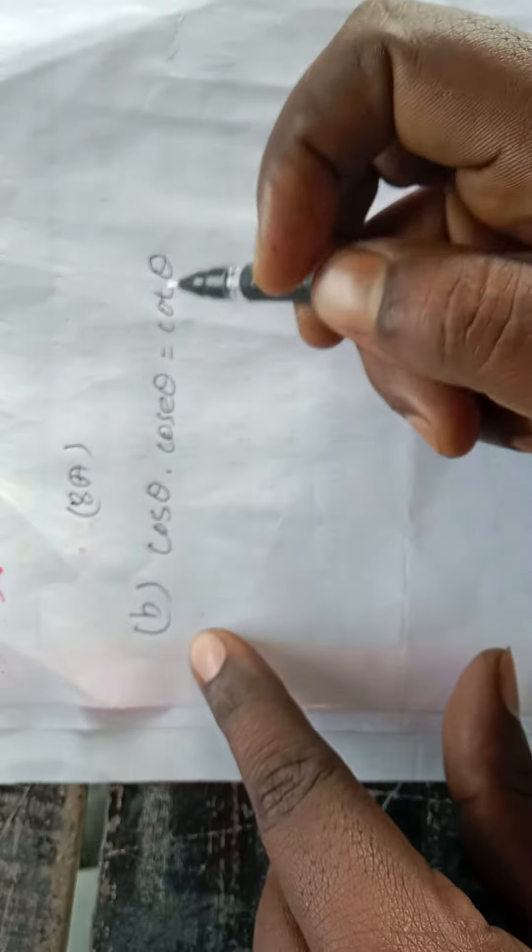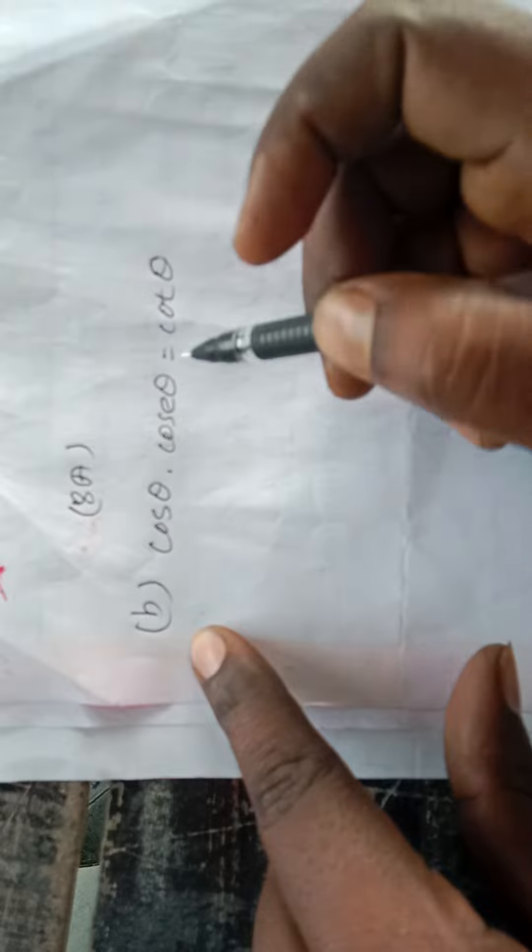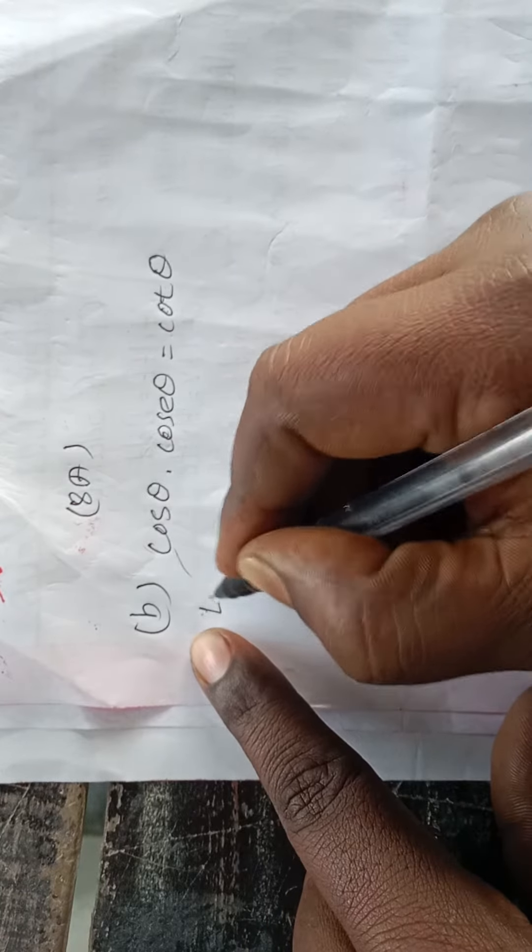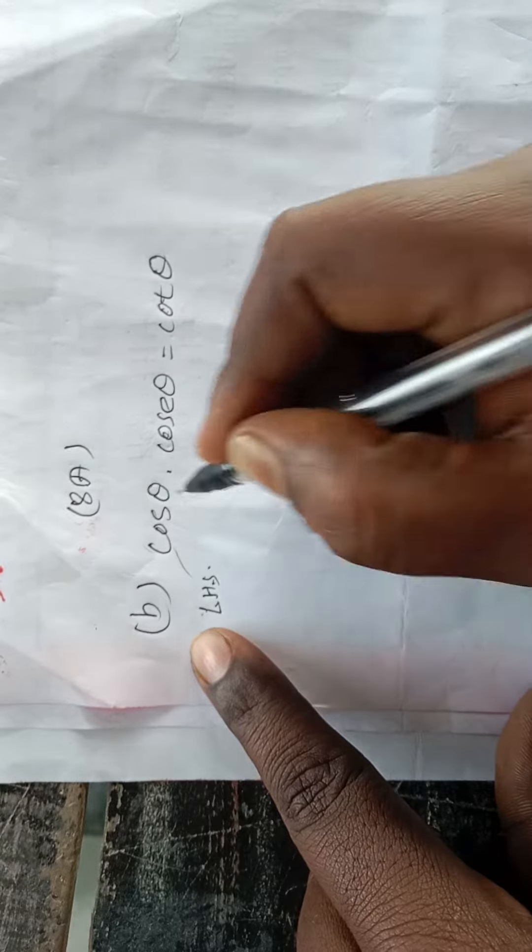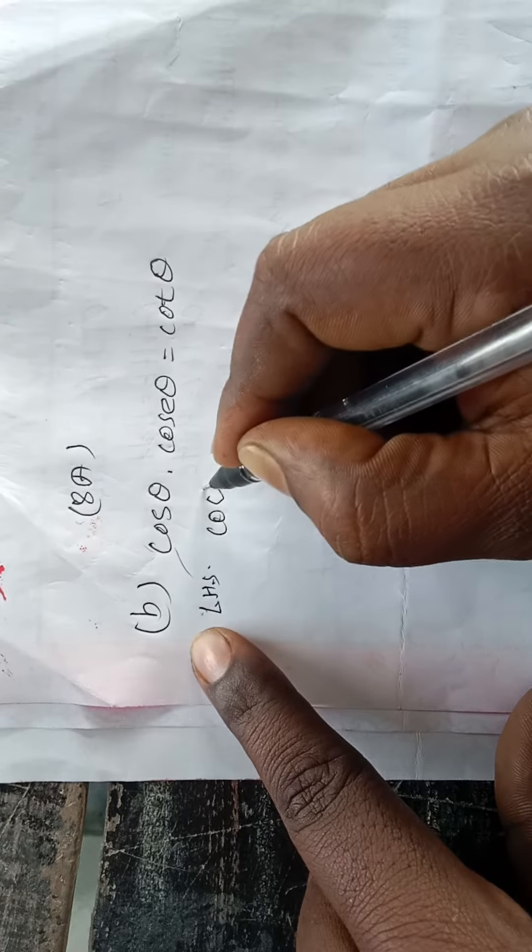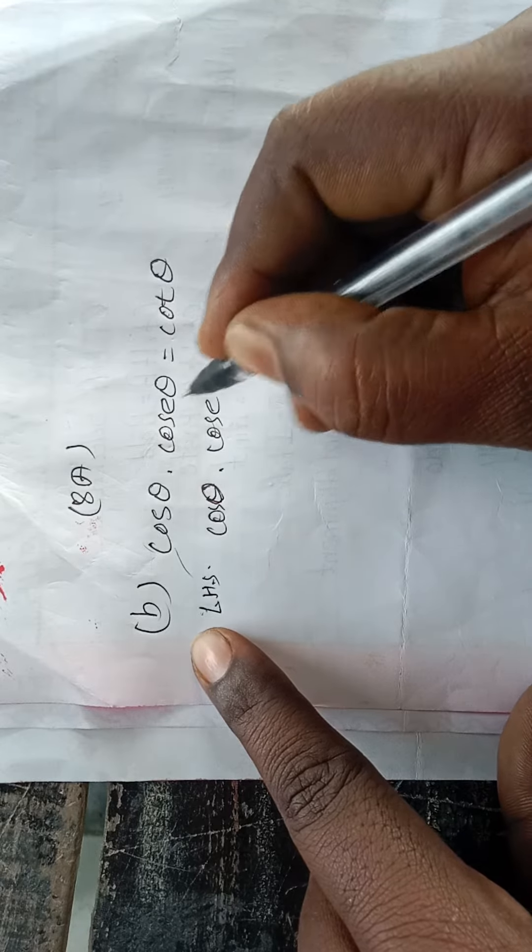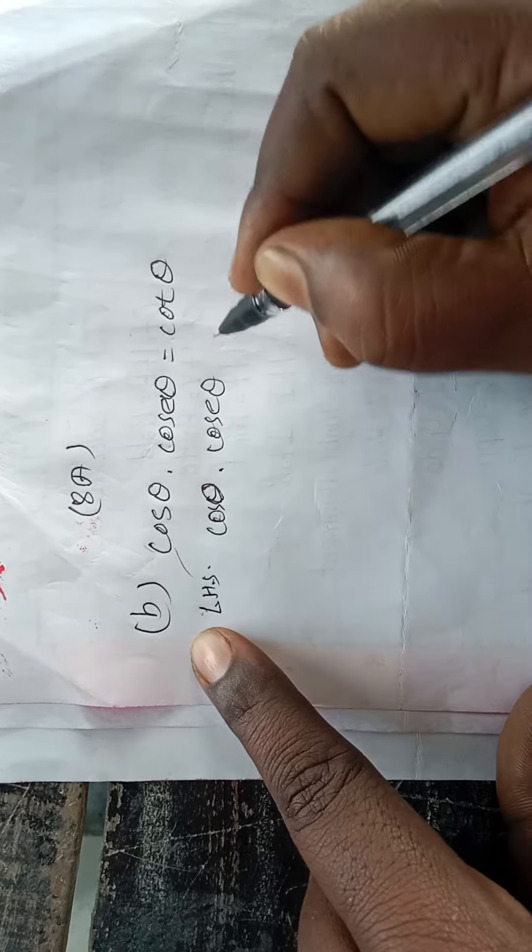This is a question from class 8: cos θ · cosec θ = cot θ. We have to take the LHS, left hand side: cos θ · cosec θ.